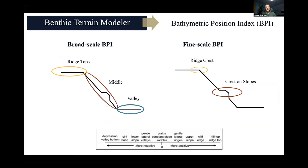The Benthic Terrain Modeler uses the Bathymetric Position Index, which is quite widely used in terrestrial landscape ecology to classify landscape structures based on change in slope position. BPI is a measure of a reference position relative to its surrounding locations, done by pre-defining an annulus and running neighborhood analysis. It is a scale-dependent derivative, so you need to adjust it for each study site. For broad-scale BPI I chose 250 to represent larger features such as ridge tops, slopes, and valleys, and fine-scale BPI to represent smaller features like crests on slopes. Resulting positive values represent cliff edges and ridge tops, zero represents planes and constant slopes, and negative values represent lower slopes and valley bottoms.